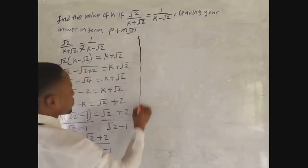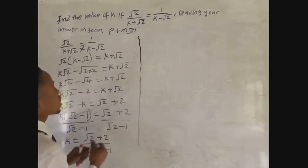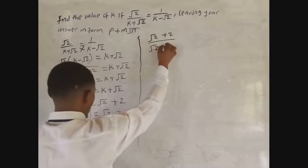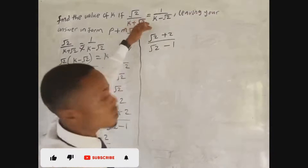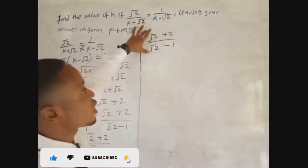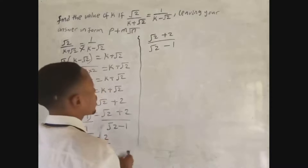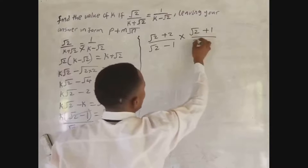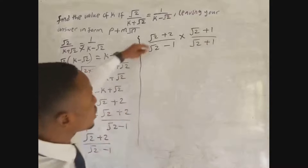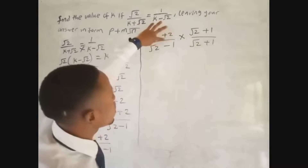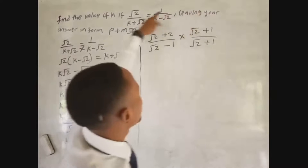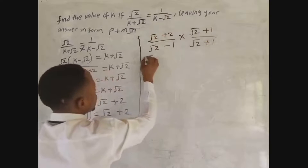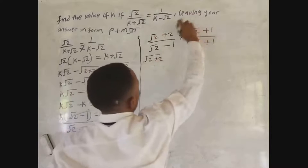We have (√2 + 2) over (√2 − 1). If you see something like this, you have to rationalize. To rationalize, we multiply both the numerator and denominator by the conjugate of the denominator. The denominator is (√2 − 1), so we multiply top and bottom by (√2 + 1).